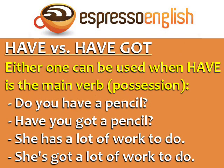Now let's learn the difference between have and have got. Either one can be used when have is the main verb in the case of possession. For example: Do you have a pencil? Have you got a pencil?